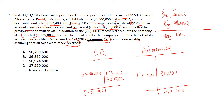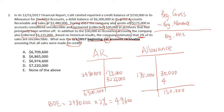Since the estimation of uncollectable amounts is 2% of sales, we can calculate bad debt expense using $2.48 million in sales. We debit bad debt expense and credit allowance for $49,600.